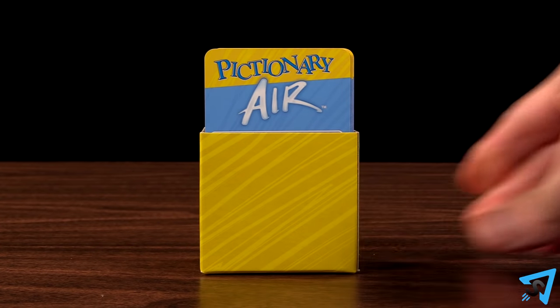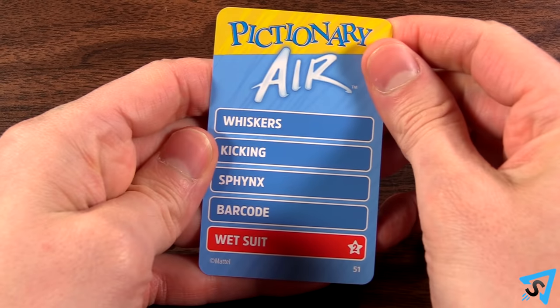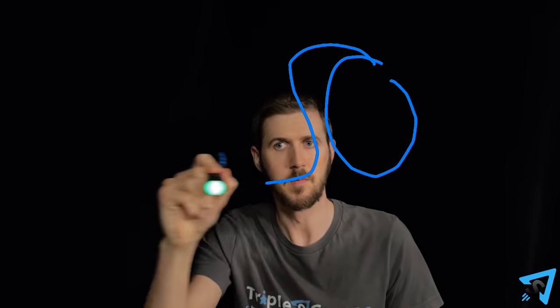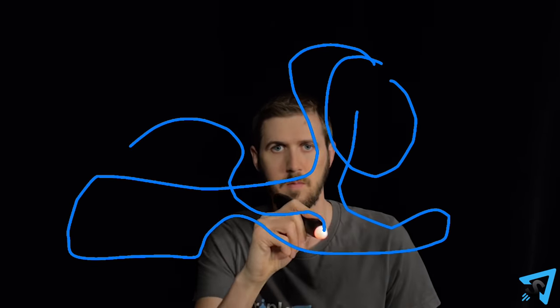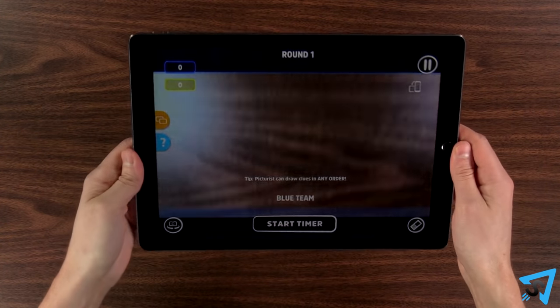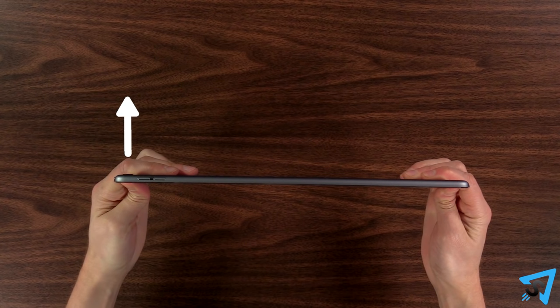Set the box of cards near the Picturist and give them the pen. The Picturist takes a card from the box and secretly looks at the words. There are five clues on each card that the Picturist is trying to get their team to guess by drawing clues in the air. To draw, one person holds the smart device with the camera pointing at the Picturist so the Picturist cannot see the screen.